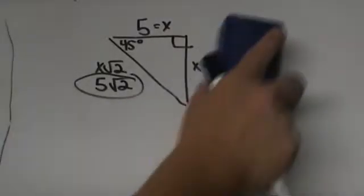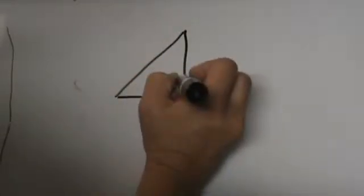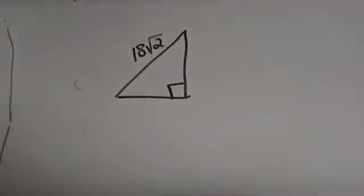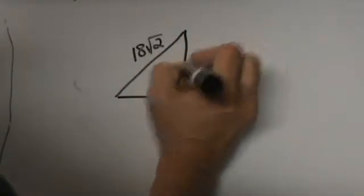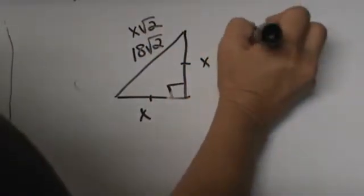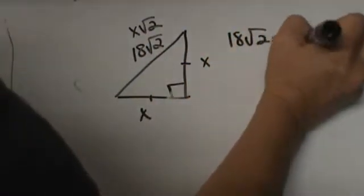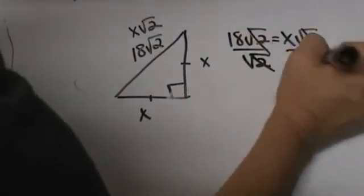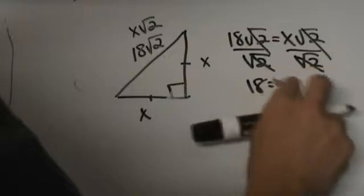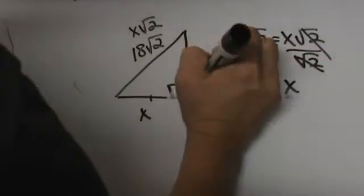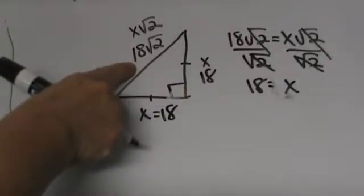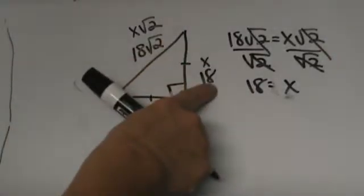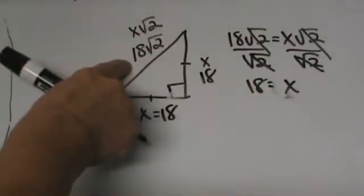What if you are given the hypotenuse? Let's look at the second scenario. Say you have 18√2 as your hypotenuse. You label this side x and the hypotenuse x√2. Set 18√2 equal to x√2, then divide both sides by √2 and you get x = 18. So each of the legs is 18. Given the hypotenuse, divide by √2 to get the leg; given the leg, multiply by √2 to get the hypotenuse.